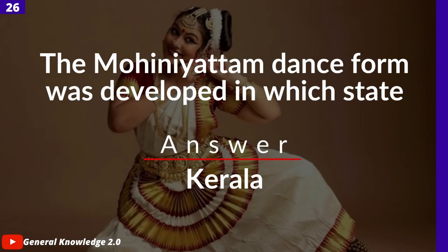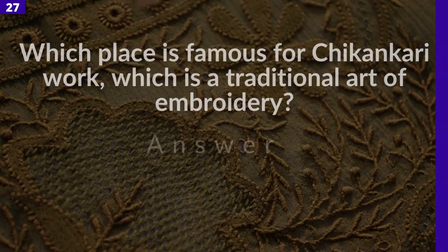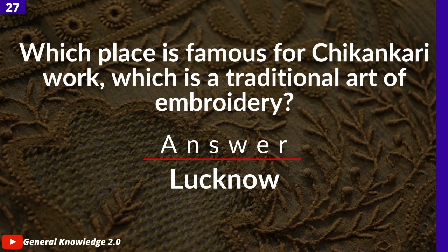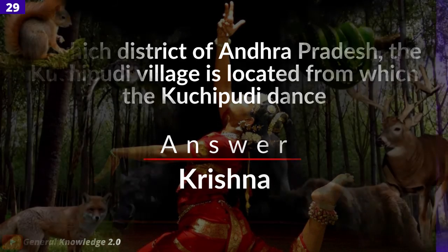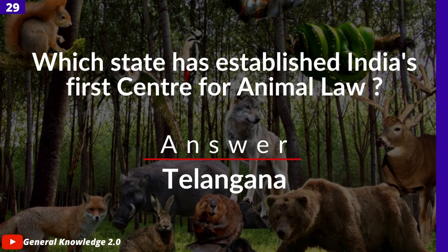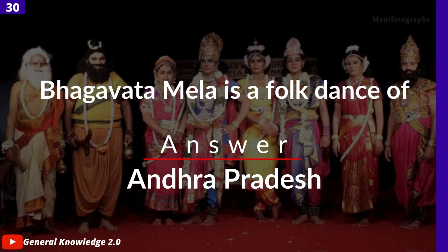Mohiniyattam dance form was developed in which state? Answer: Kerala. Which place is famous for Chikankari work? Answer: Lucknow. In which district of Andhra Pradesh is the Kuchipudi village located, from which the Kuchipudi dance originated? Answer: Krishna. Which state has established India's first center of animal law? Answer: Telangana. Bhagavata Mela is a folk dance of — answer: Andhra Pradesh.